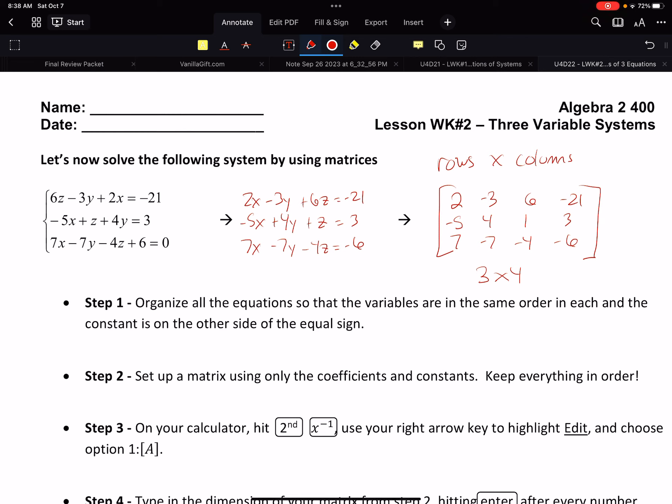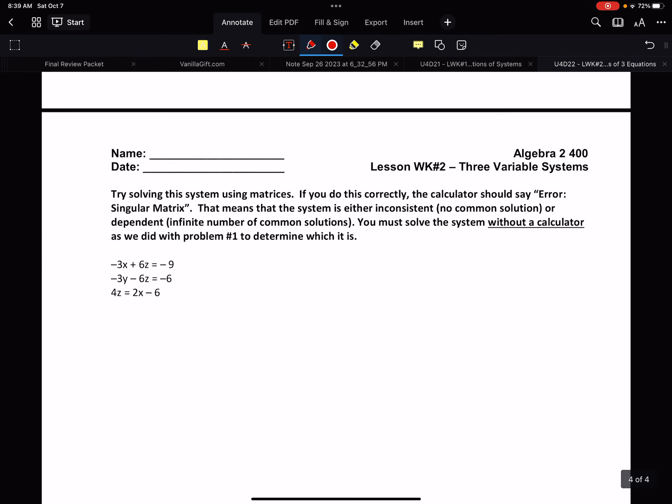So we got that answer from our matrix. That process you can do every single time - you can do with two variable systems, it would be a two by three matrix. But not every time does it give us the answer. So if we look here at this situation, if I wanted to do the matrix, well first thing first I got some dummy variables I need. So I really gotta make this into negative 3x plus 0y plus 6z equals negative 9, 0x minus 3y minus 6z equals negative 6, and negative 2x plus 0y minus 4z equals negative 6.